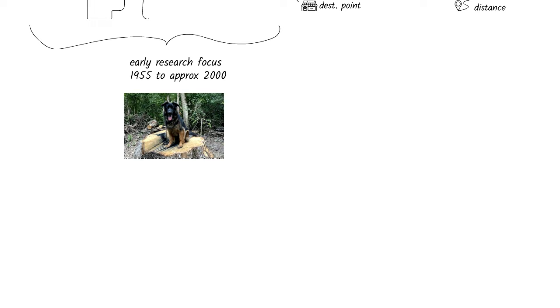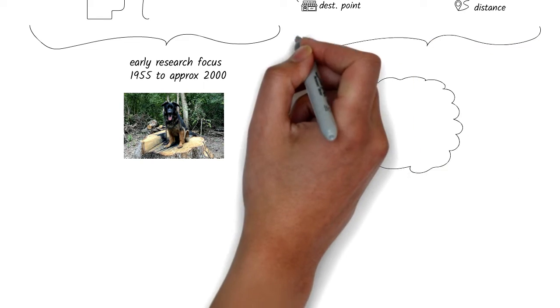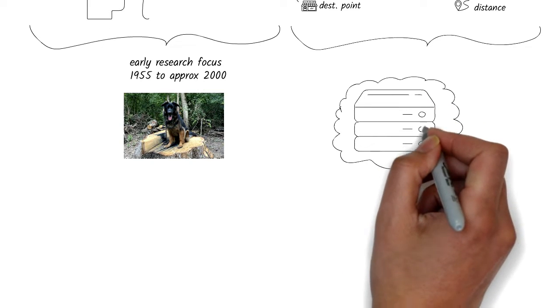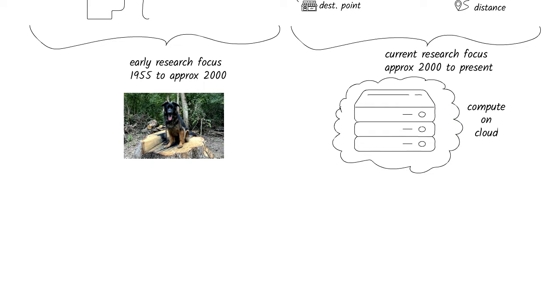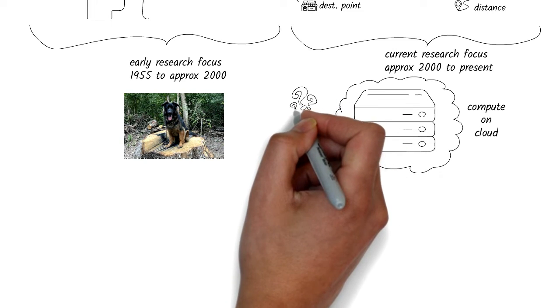But surprisingly, with more computing power available, we found out that deep learning models can represent complex world concepts with basic pixel data and somehow come to correct conclusions most of the time if trained correctly. This formed the basis of deep learning research.